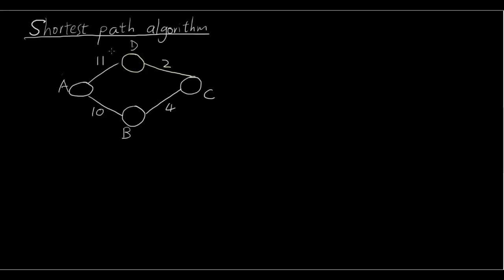So let's have a look at this network here as a simple example. Let's say you're standing at A — you're standing at this spot here — and let's say we want to get to C. So we want to find the shortest path from A to C. Now we want to get to C because this is our destination. What is the shortest way to get there?